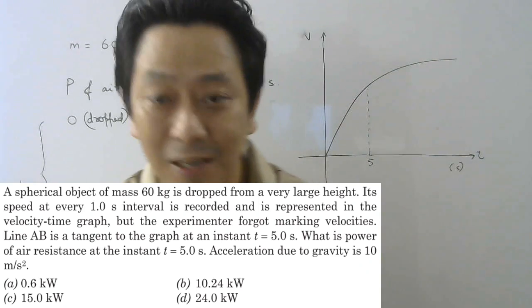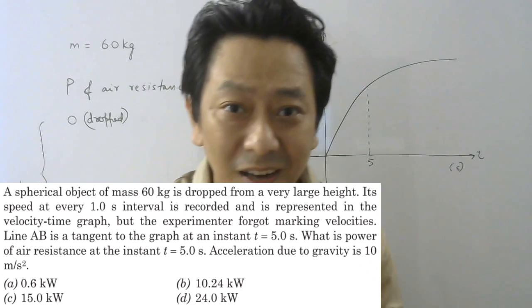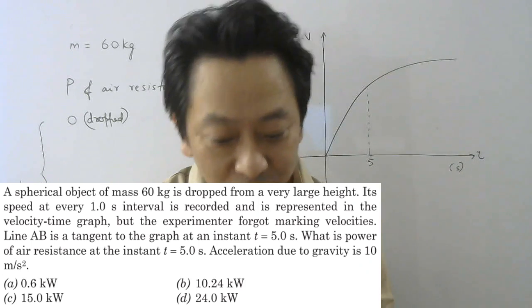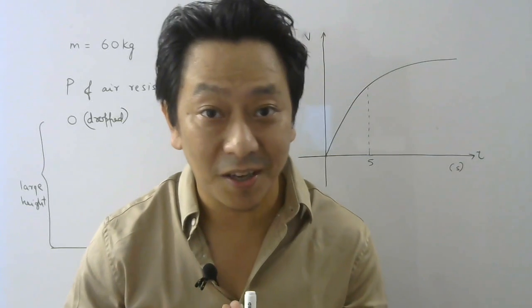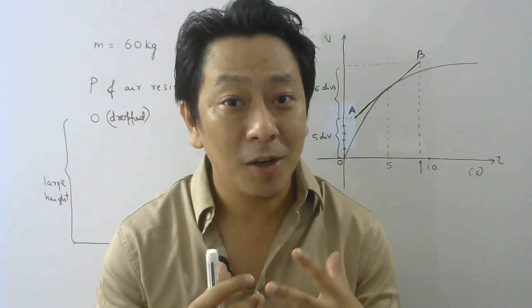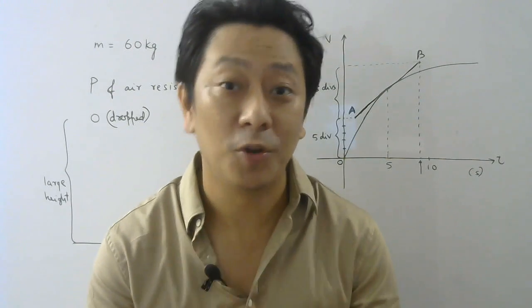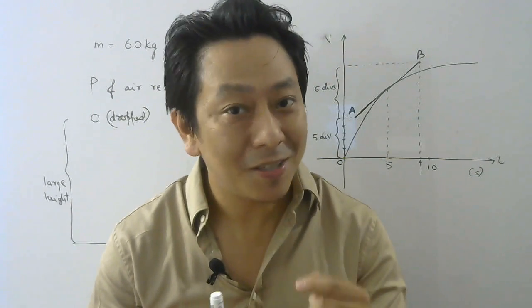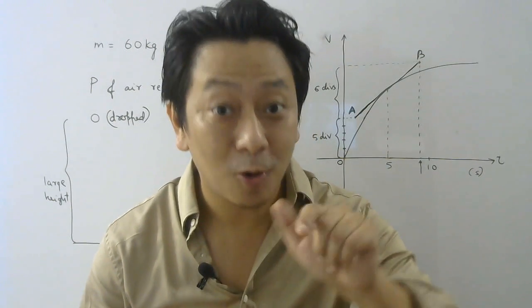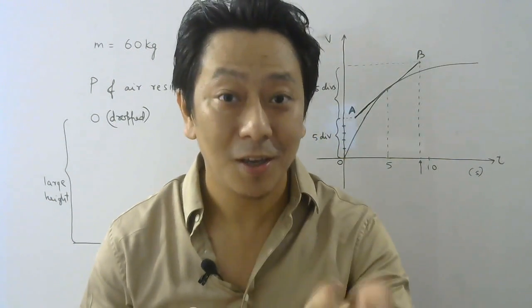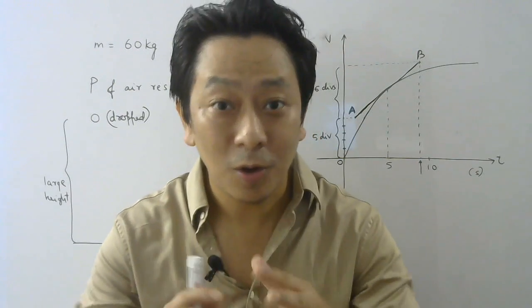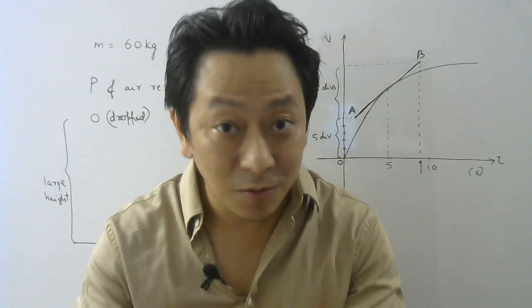At t equal to 5 seconds, they clearly want instantaneous power. Acceleration due to gravity is 10 meters per second squared. Whenever we want to calculate power, we must know which force we are calculating it for, because power is defined as work done divided by time taken, and work is always done by a force. So whenever we calculate work done, we should know which force we are referring to.